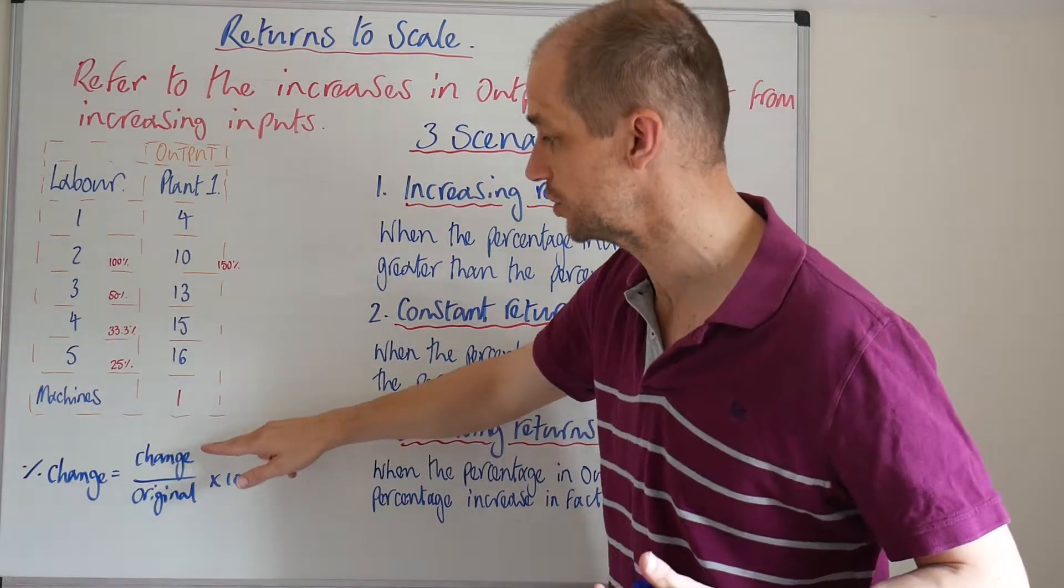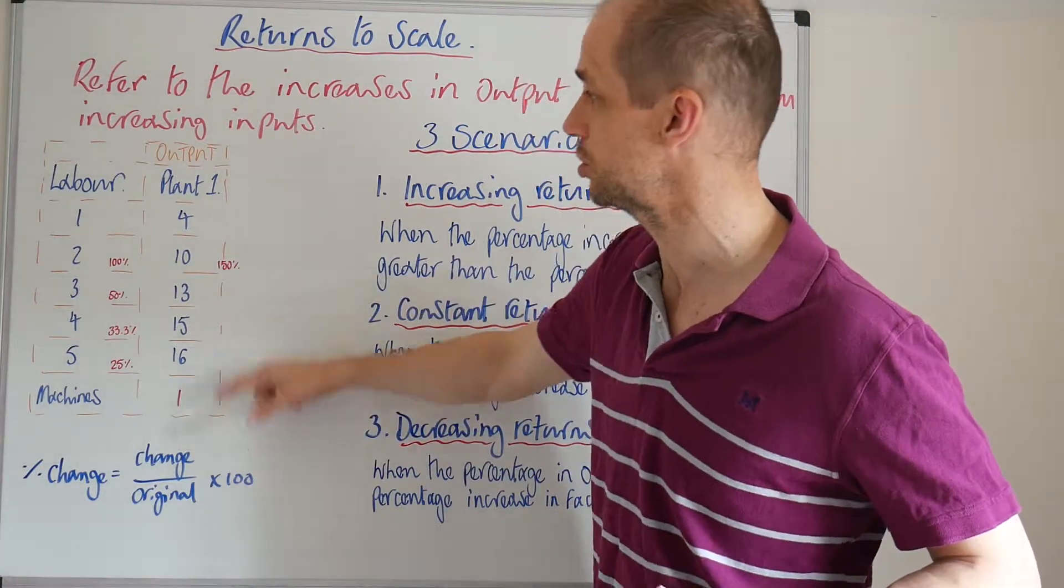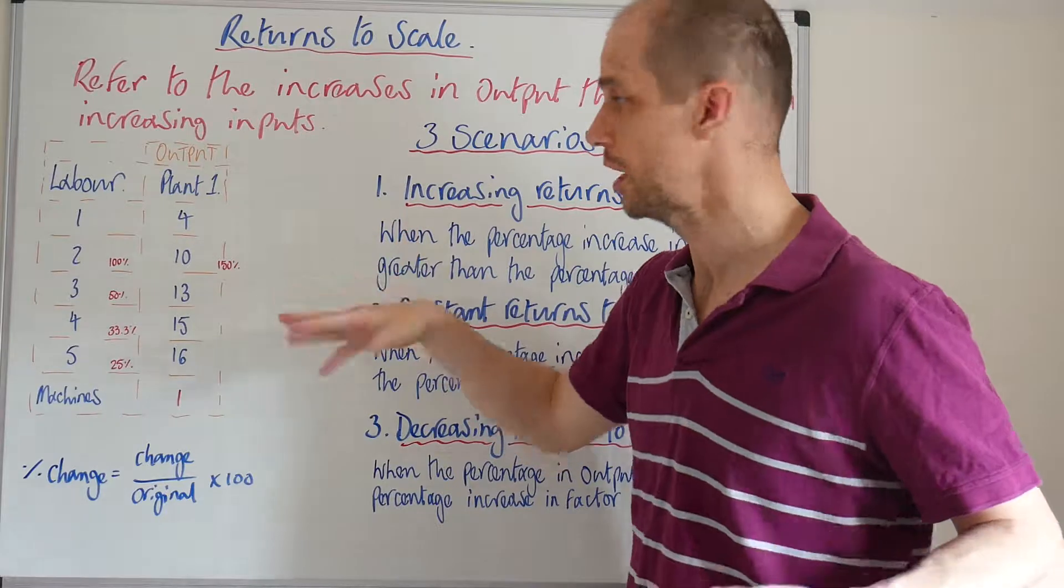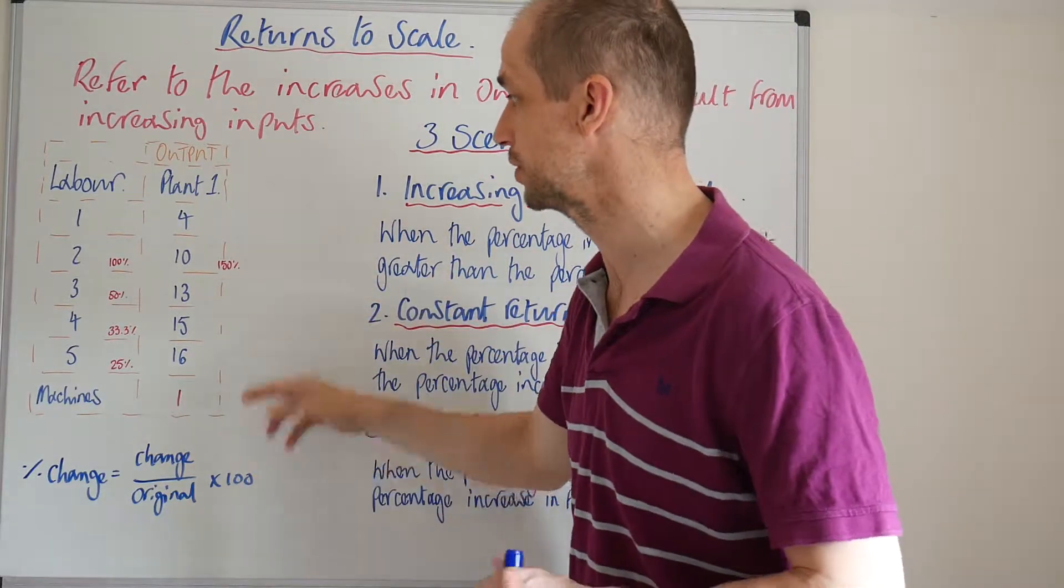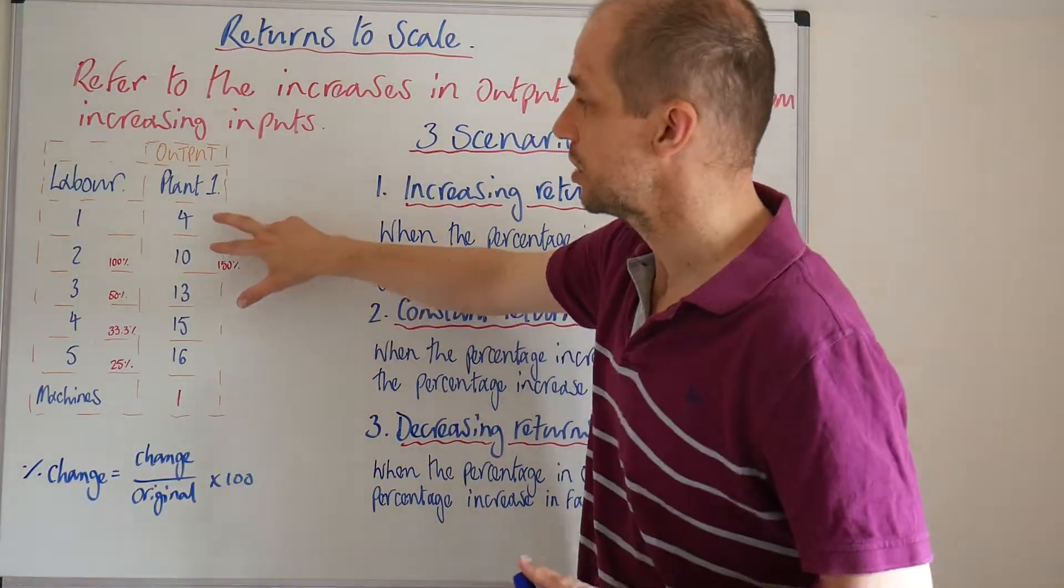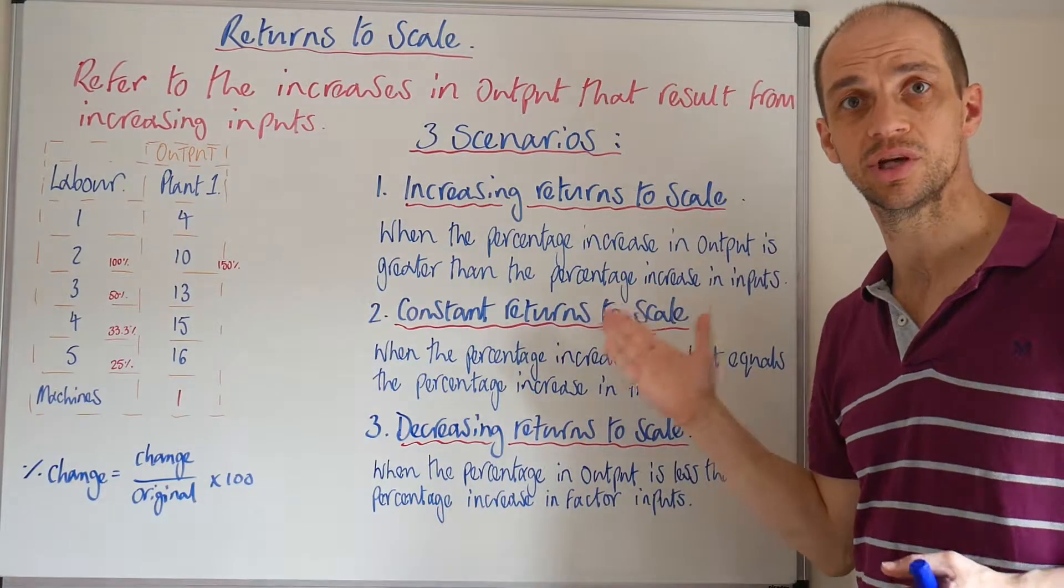So what we simply do there is you take 6 as the change and divide it by the original 4 and therefore it's 150%. Now, we see that that is an increasing return to scale.